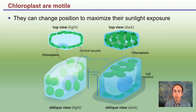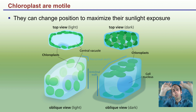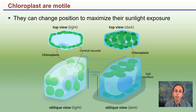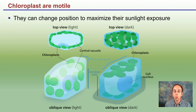Looking at a top view and a sideways view, in dark environments those chloroplasts will move towards the top so they're able to maximize as much light as possible. And if there's too much light, they can actually move to the side or work their way through the cell, becoming more diffused. When they want to maximize light absorption, they can move within the cell.